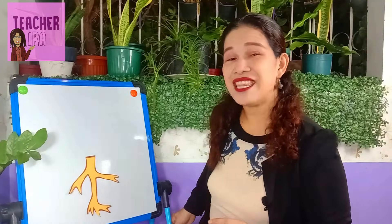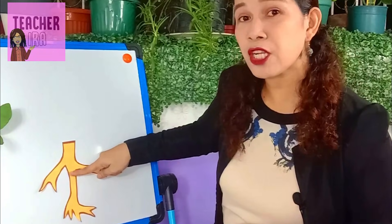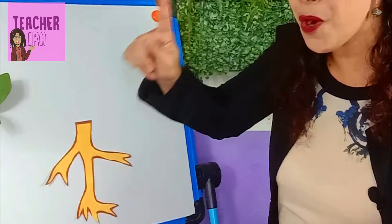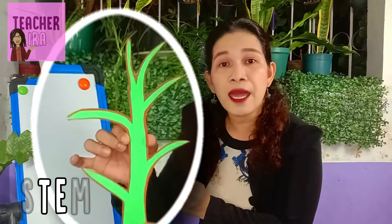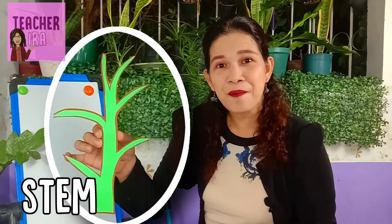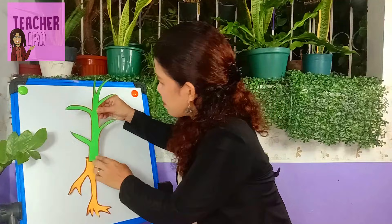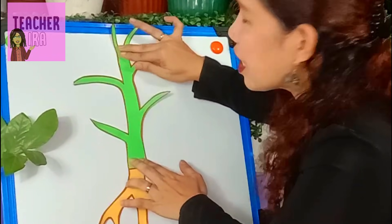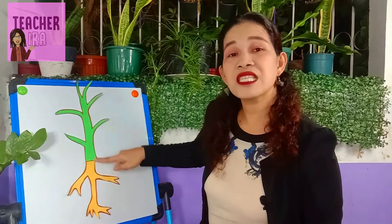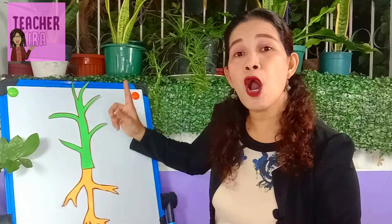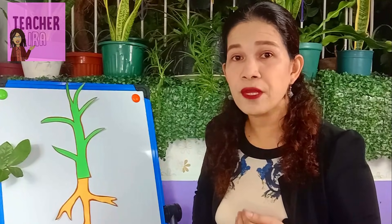Let's slowly build our plant. Right after the roots — which get all the water and minerals from the soil — that water and minerals need to go up. So the next part will do that work, and we call this the stem. The stem will carry all the vitamins and minerals that the roots got, and it also holds the other parts of the plant.